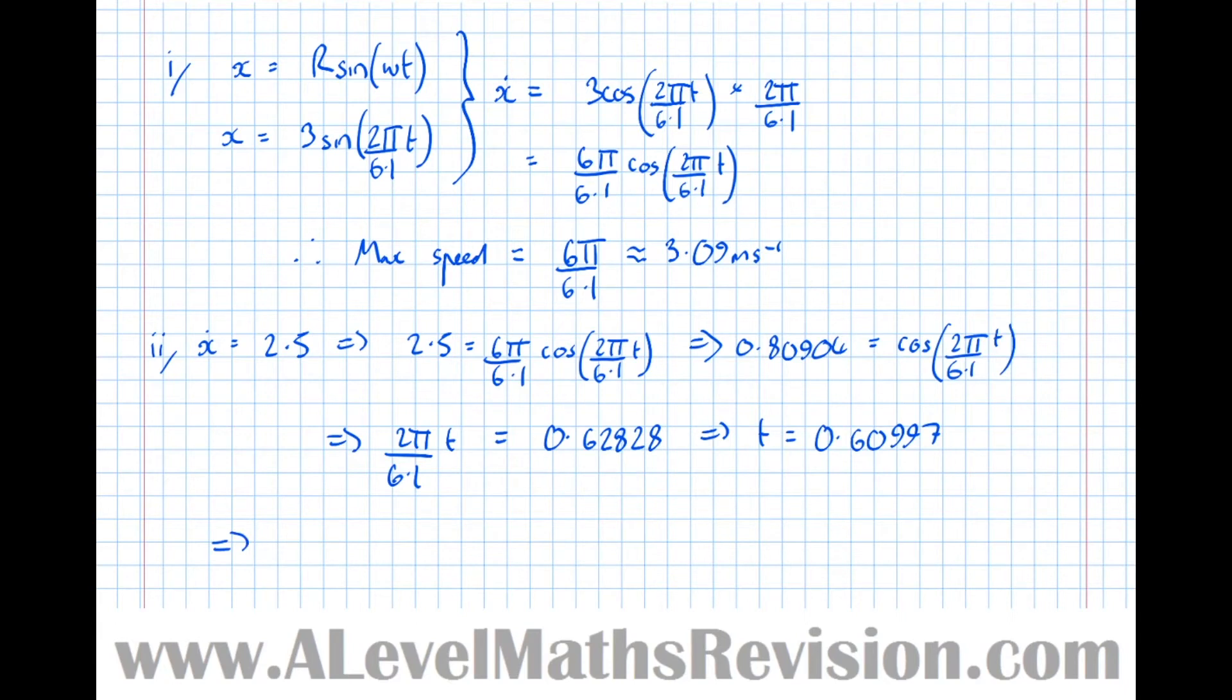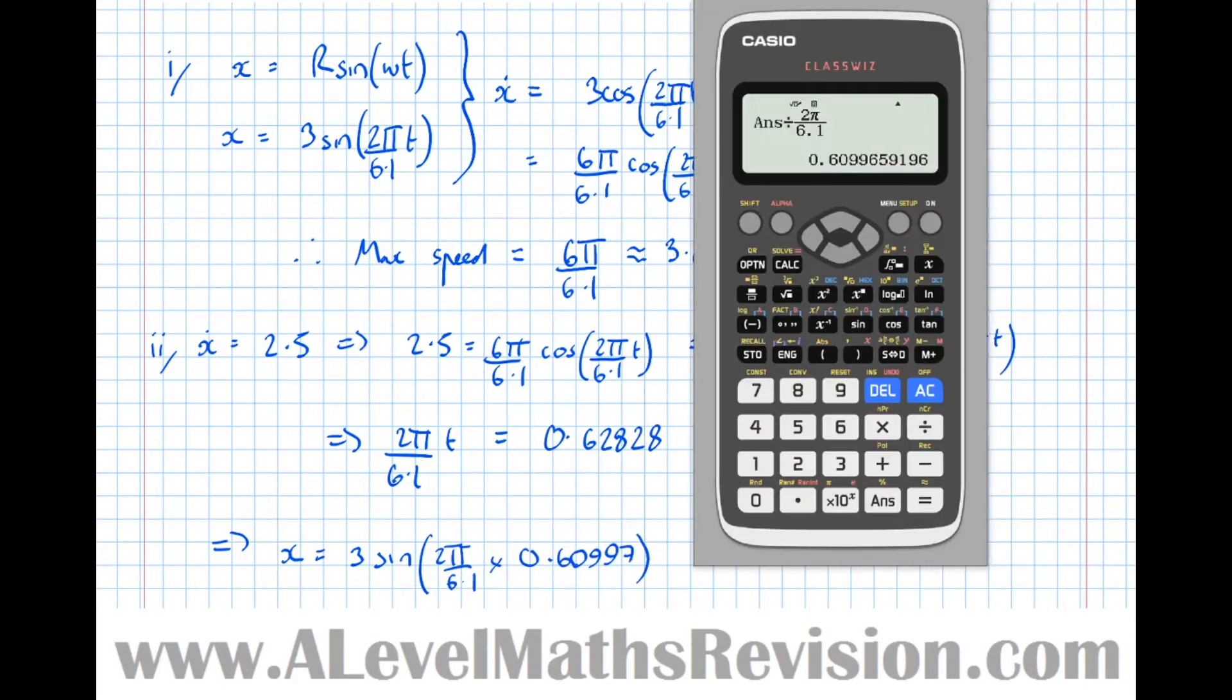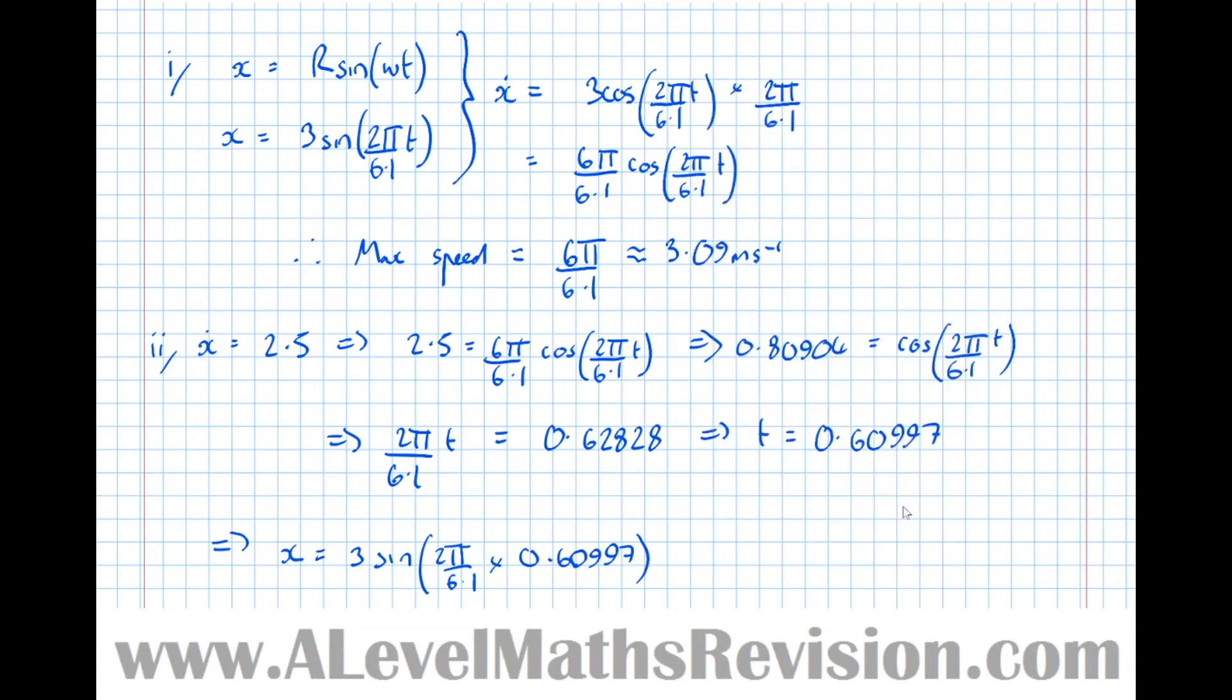Now we've got the time that it's at that speed, we're going to find the distance away from the centre at that time. The displacement equals 3 sine of 2 pi over 6.1 times 0.60997, which is approximately equal to 1.76 metres.